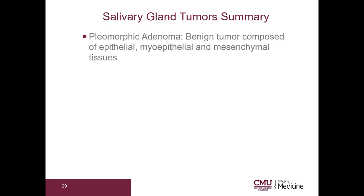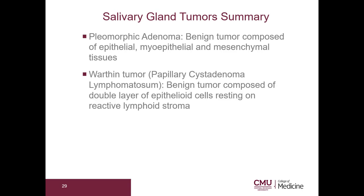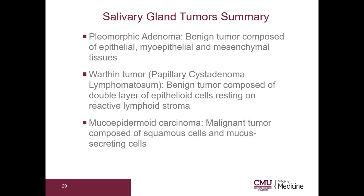Pleomorphic adenoma is a benign tumor composed of epithelial, myoepithelial, and mesenchymal tissues. Warthin tumor is a benign tumor composed of a double layer of oncocytic cells resting on reactive lymphoid stroma. Mucoepidermoid carcinoma is a malignant tumor composed of squamous cells and mucus-secreting cells.